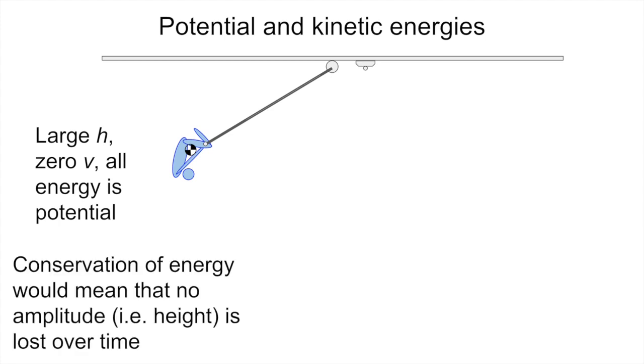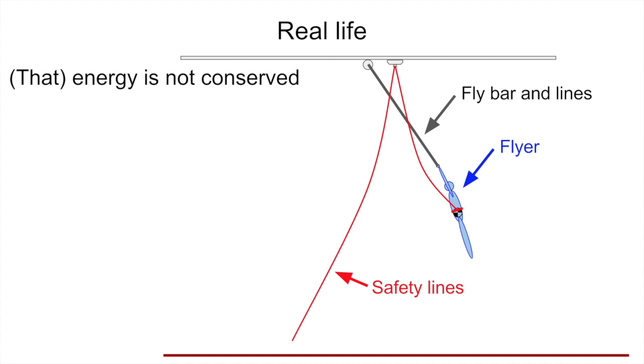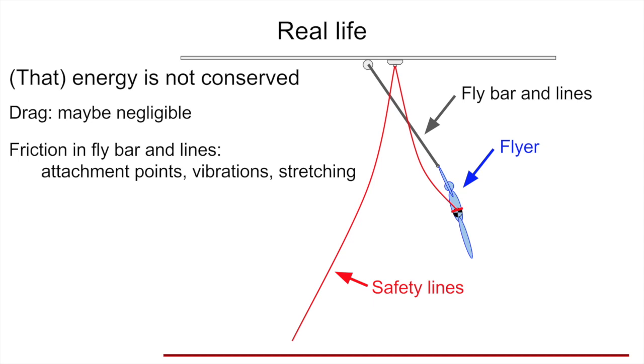Now, if conservation of energy were exact for this system, that would mean that no amplitude, that is to say, no height is lost over time. Of course, in real life, that energy is not conserved because it doesn't include all of the different terms that really should be included. There's certainly drag as you're whooshing through the air. Maybe that's negligible, you're not going all that fast, but there's the possibility of dissipating energy by jiggling the air around. There's friction in the fly bar and lines, at the attachment points where the lines are swiveling, and there's vibrations and stretching in the lines. There's definitely friction in the safety lines, as the trolleys and pulleys move back and forth, you dissipate energy, and there's also vibrations and stretching in those lines.